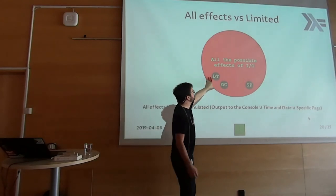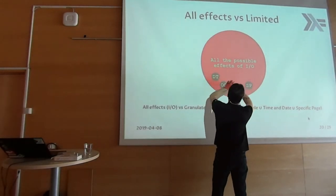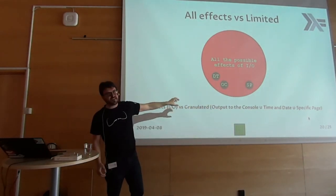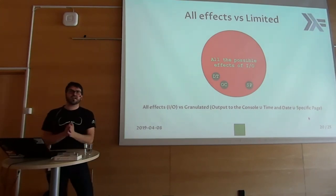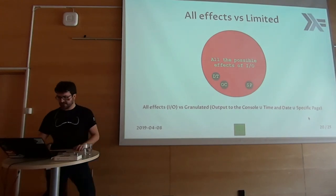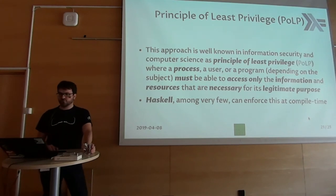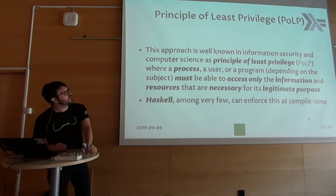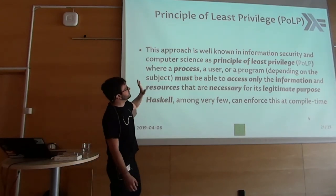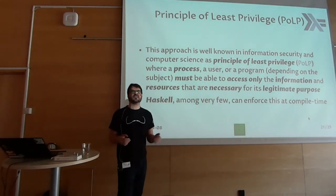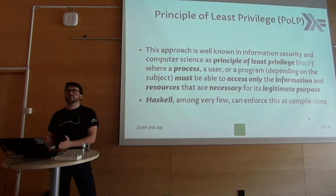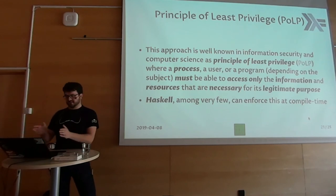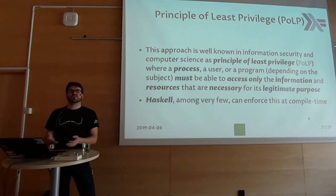We go from all effects to a very small three-subset combination. You can see now that I don't have to worry too much about what's happening with my application, because up front I already know it can only do three things. This concept — thanks to Alejandro for pointing it out — is what we call in information security the Principle of Least Privilege, or POLP. The powerful thing about Haskell is that this is something you see with C and sandboxes and Docker, but Haskell can do it at compile time. If we don't comply with our requirements, we cannot build a binary. If you cannot build a binary, you cannot ship it.